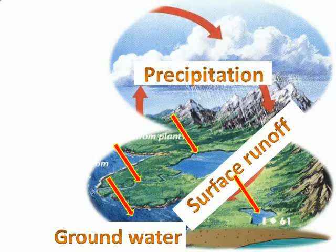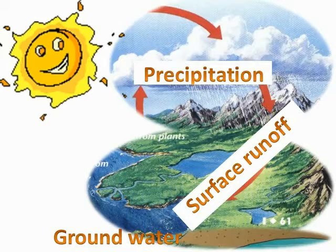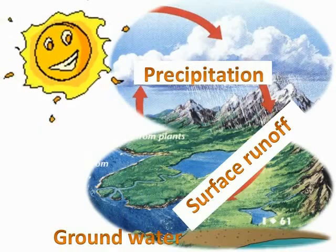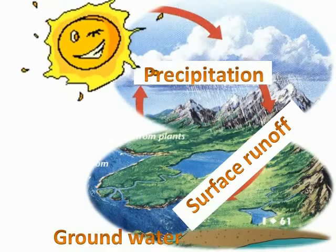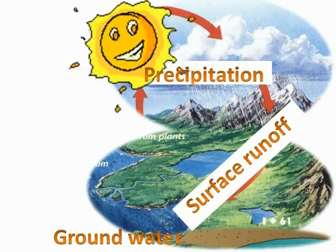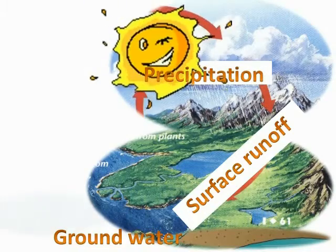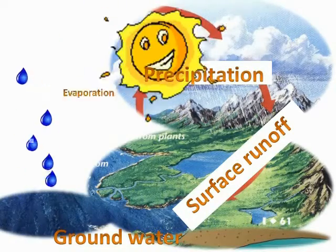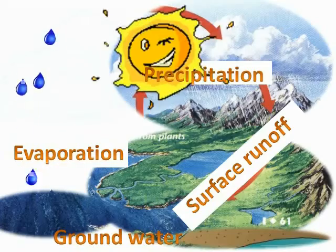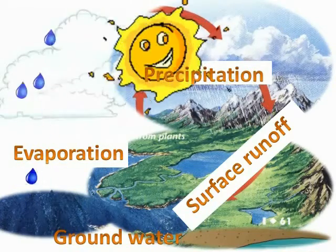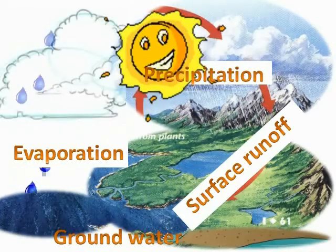Just as a bicycle must be pedaled, the water cycle must have a source of energy. The water cycle's energy source is the sun. Water that is exposed to sunlight heats up. When the water molecules gain enough heat energy, they escape into the atmosphere as water vapor. This process is called evaporation.